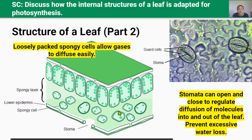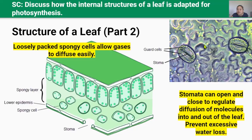Underneath the spongy layer is the lower epidermis. It's very similar to the upper epidermis except for one major difference: the stomata. The lower epidermis cells look like a jigsaw puzzle, and embedded through it are guard cells which control the opening and closing of the stomata. Guard cells close the stomata to limit transpiration and water loss, and they open again when carbon dioxide needs to come in and diffuse through for photosynthesis.